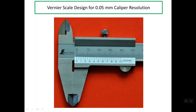Good evening. My presentation is about Vernier scale design for 0.05 mm caliper resolution. I have talked in the previous presentation about the Vernier scale design for the 1/10th mm. Now I'll talk about the second type, which is 0.05 mm. As you see here, this is the Vernier caliper resolution — 0.05. We need to understand the different lengths of the Vernier scale and how to compute the least count.